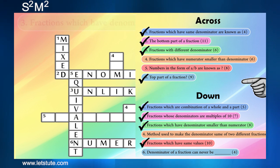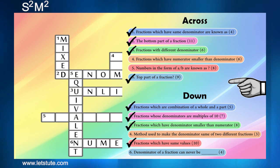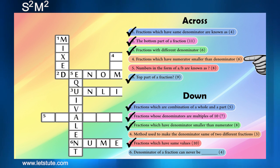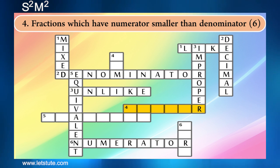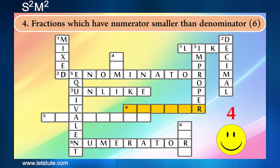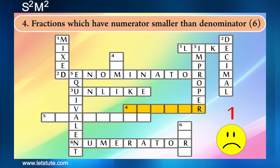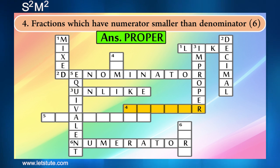If you have a look at question number four in a cross, it says fractions which have numerator smaller than the denominator. Now the answer is going to be very simple because we just solved the opposite of that, and the answer is proper fractions.